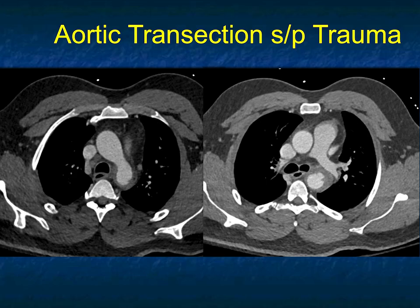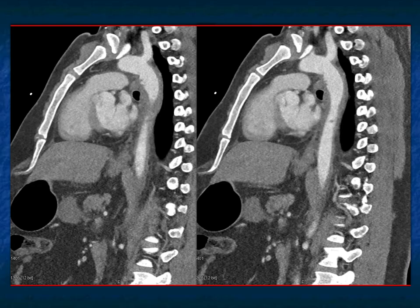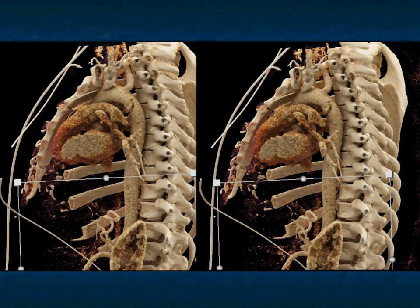Here it is on the sagittal views, showing nicely the length of the intramural hematoma. When you're looking at the aorta, you've got to look at the coronals and the sagittals. Often, particularly with vascular injury, the 3D volume rendering is particularly valuable in looking at extent, involvement, and presence. And here it is — cinematic rendering. Look at that beautiful example of a dissection past the left subclavian artery. Patient was very lucky — stent was placed and patient did great.